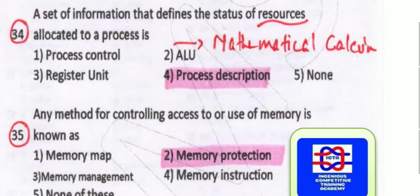A set of information that defines the status of resources allocated to a process is known as process description. This is one thing you have to remember — process description is a set of information that defines the status of resources allocated to a process.